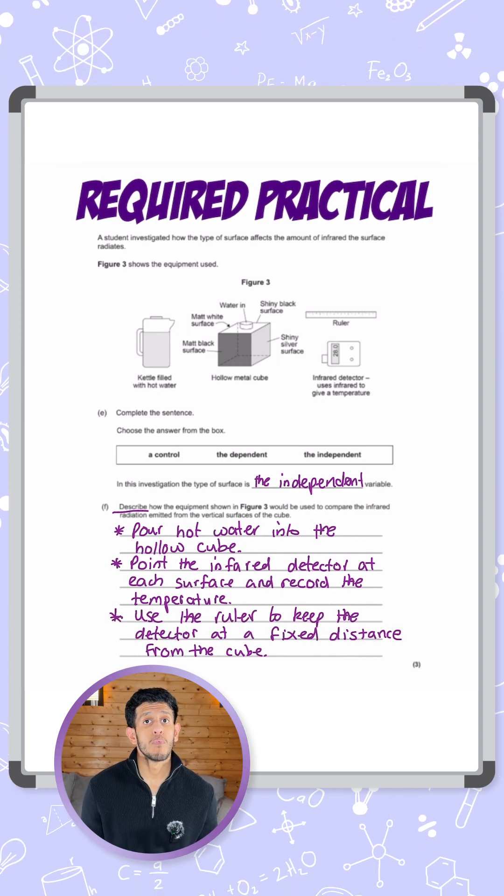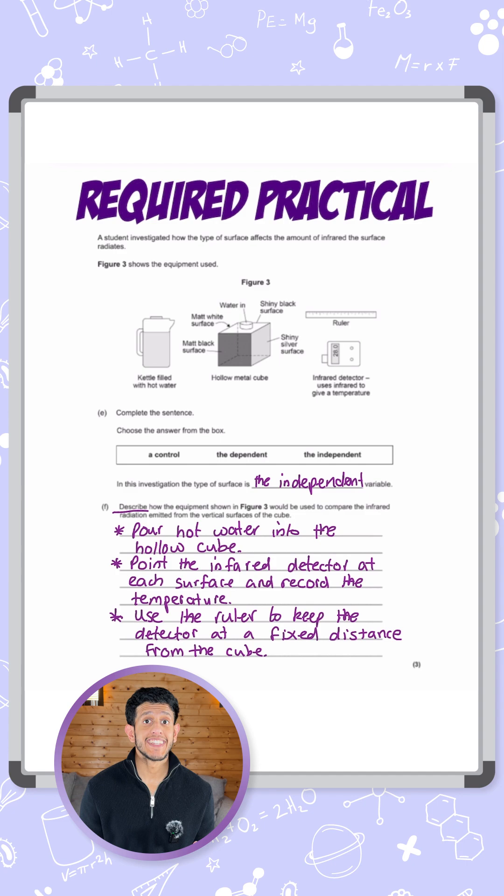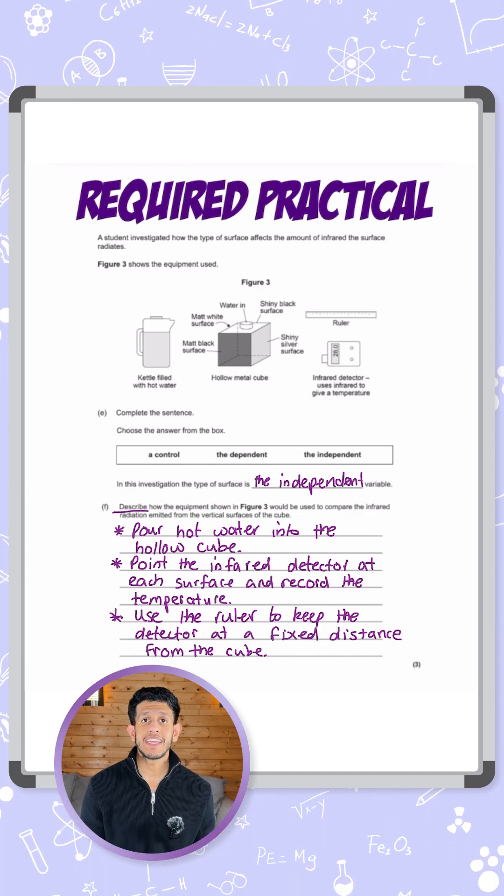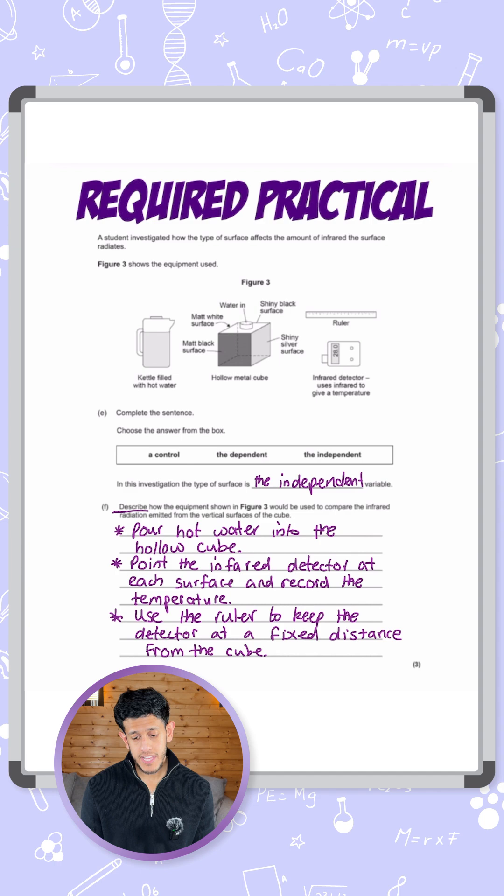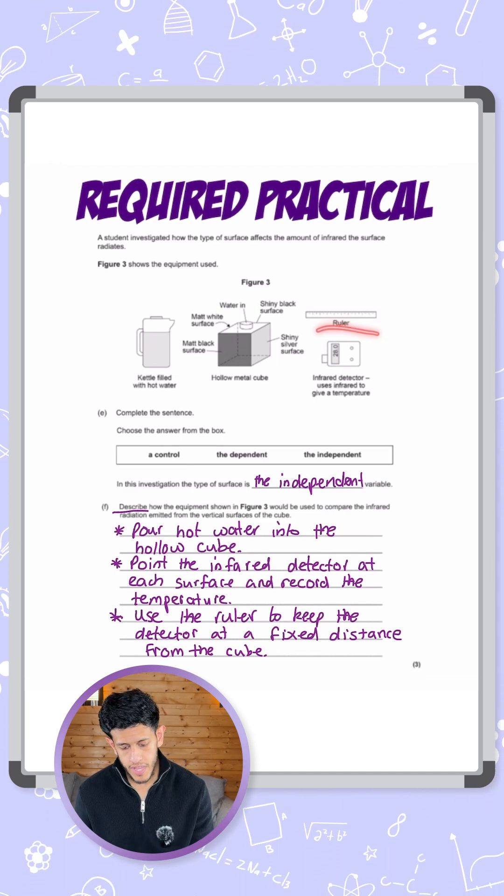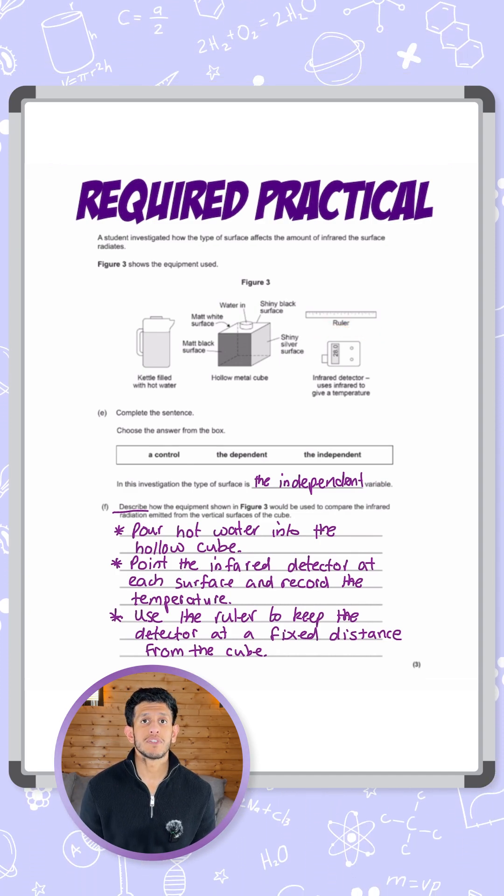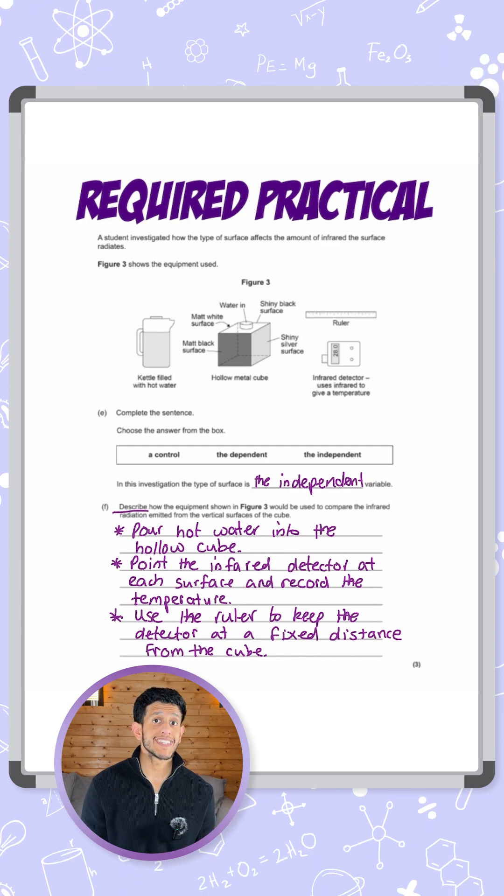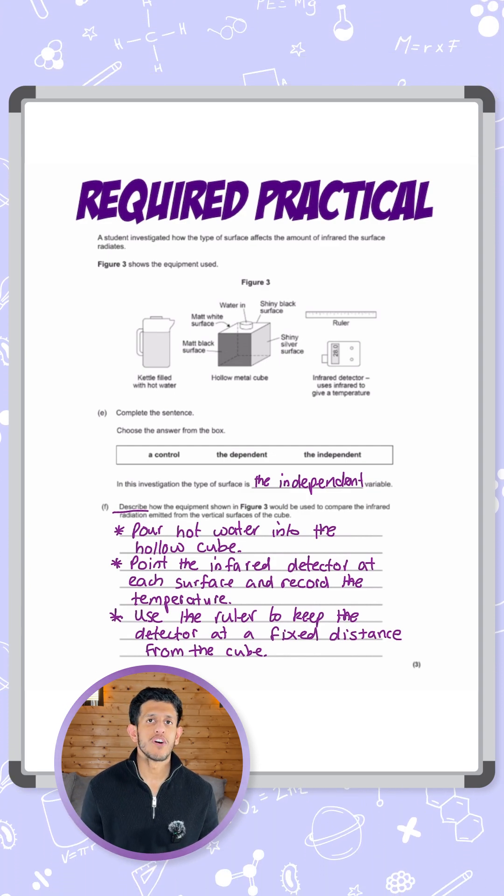Now for the third mark, we can say that we want to make sure in order to make it a fair test that the distance of the infrared detector is the same from each surface every time we measure it. So that's why they've given us the ruler here, so we can include that in our description. We use the ruler to keep the distance fixed between the detector and the cube, and that's what we need for our three marks.